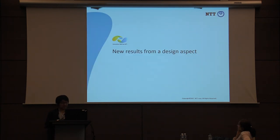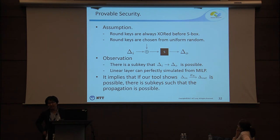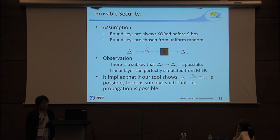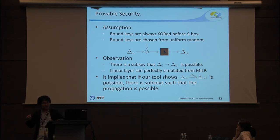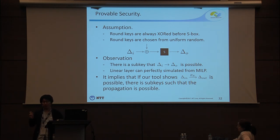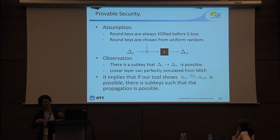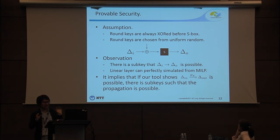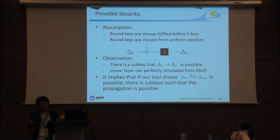Finally, I talk about new results from the design aspect. By using our tool, we can obtain something like provable security. Of course, we need assumptions. The first assumption is that round keys are always XORed before the S-box. The second assumption is that round keys are chosen uniformly at random. If we focus on a real block cipher, the round key is generated from the key scheduling algorithm, so this assumption may not strictly hold. But if we consider cryptanalysis, we sometimes use this assumption, and I think it is reasonable.